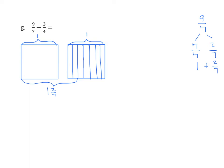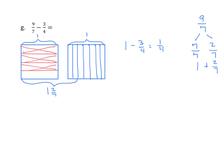We'll partition the whole into 4 equal parts and cross out 3 of the 4. What we've done is subtract 1 minus 3 fourths, which gives 1 fourth. Returning to the model, we can see that we have 1 fourth and we have 2 sevenths. If we combine those two, we will have our difference. So 1 fourth plus 2 sevenths. Again, we do not have equal units, so we're going to partition both of these rectangles as we've been doing all along.